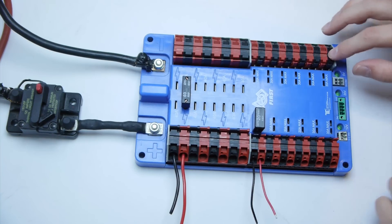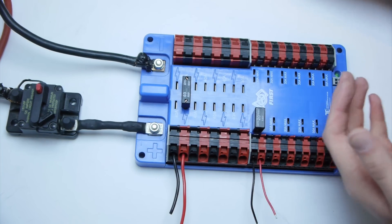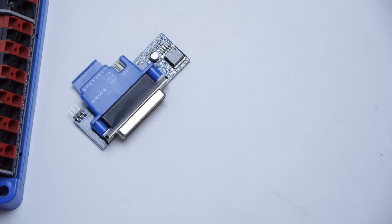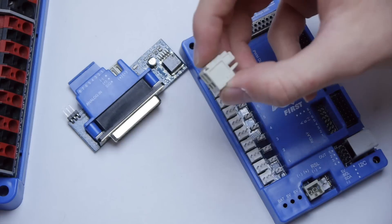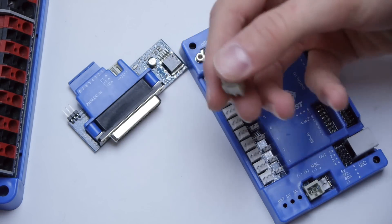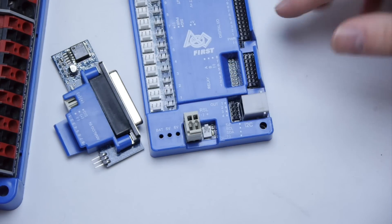The 30 amp connectors are used to power things such as your analog in breakout board and your digital sidecar. To power your analog in breakout board and digital sidecar, you'll need this type of WAGO connector. It fits in just like this and supplies power to your device.